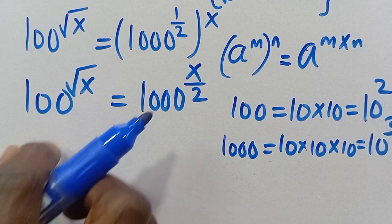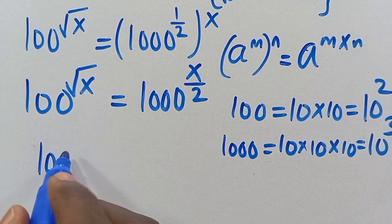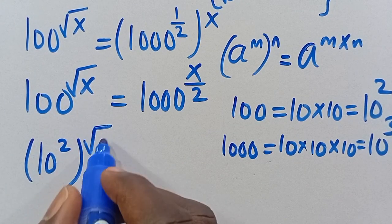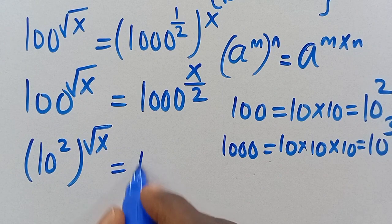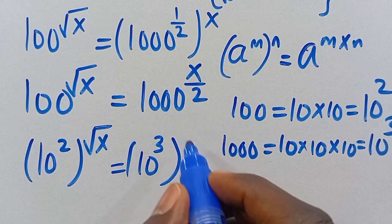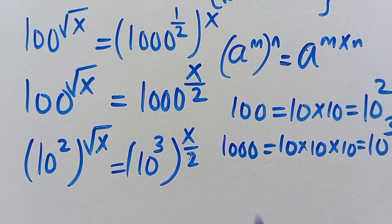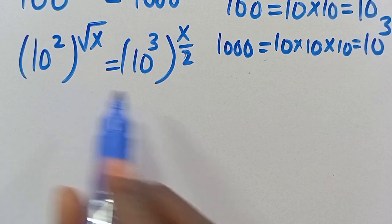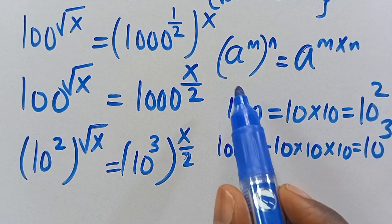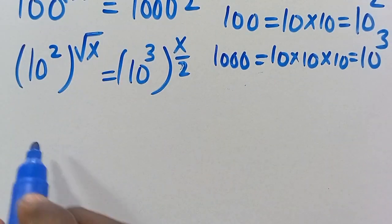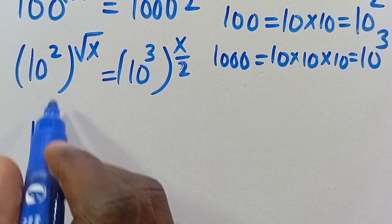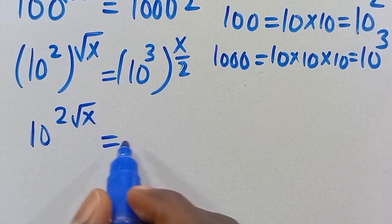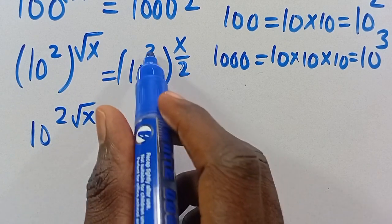Substituting these base conversions, we get (10²)^(√x) on the left and (10³)^(x/2) on the right. Applying the exponential law again, the left side becomes 10^(2√x) and the right side becomes 10^(3x/2).